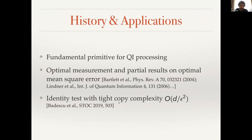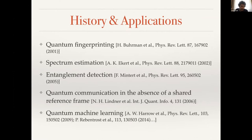Perhaps more interestingly, in 2019, people from the computer science community, in a very interesting paper studying identity tests, put tight bounds on the number of copies needed to perform this estimation task. The scaling is dimension divided by the error squared. We will see that we hit this bound, but the coefficient is important — and this is related to the quality of the swap test itself.